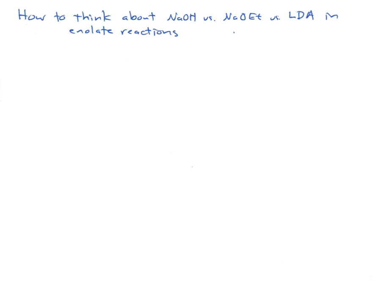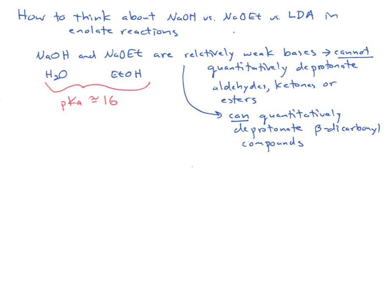How do you think about bases like hydroxide and ethoxide versus LDA in enolate reactions? The first thing to realize is that hydroxide and ethoxide are relatively weak bases. They cannot quantitatively deprotonate aldehydes, ketones, or esters. They can, however, quantitatively deprotonate beta-dicarbonyl compounds. We know that these are relatively weak bases by looking at the pKa's of the parent acids, water and ethanol, both of which have a pKa around 16.